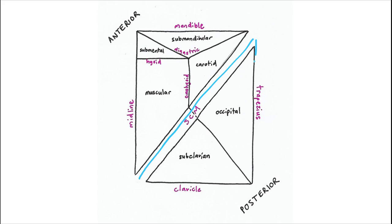And then we have the trapezius muscle making the posterior border, the mandible making the top border, the midline making the medial border, and then the clavicle underneath. Those are making up our primary borders, and then we have the digastric muscle, which frames the submandibular triangle up there.